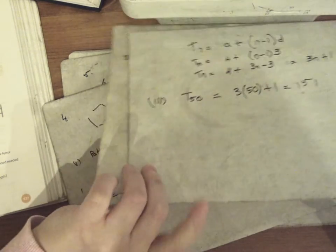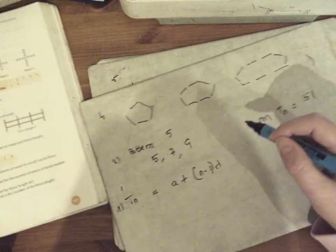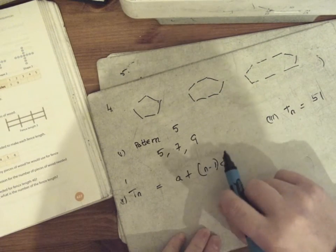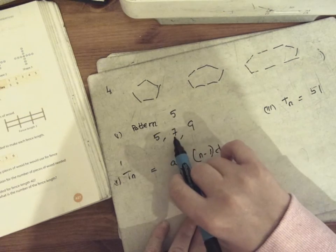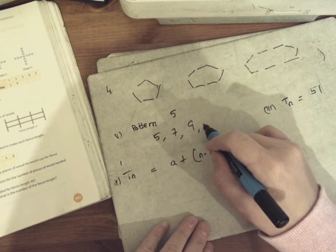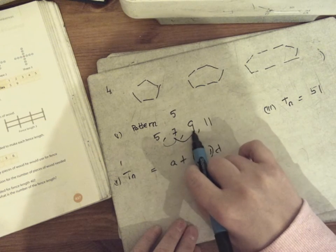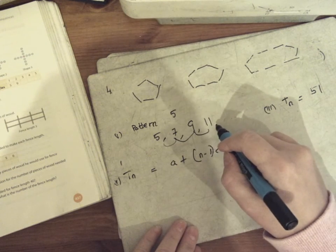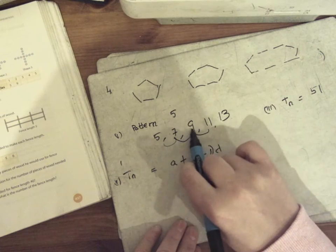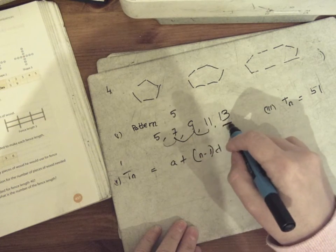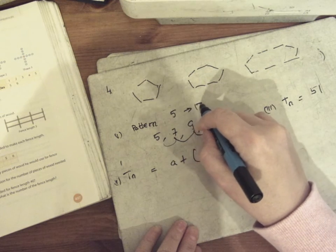Number 4 gives us a pattern like this. If we count the matchsticks, there's 5, then 7, then 9, so the next one must be 11. There's a linear sequence going up in 2s. The one after that is 13. So pattern number 5 has 13 matchsticks.